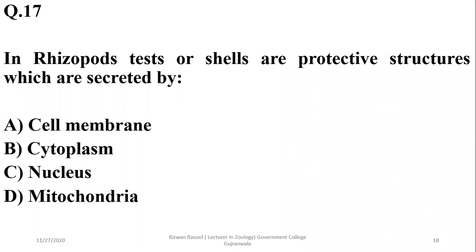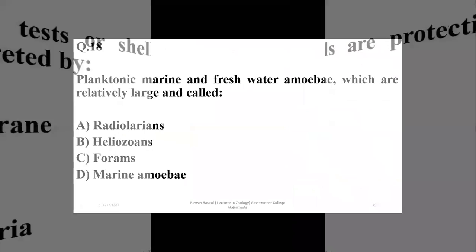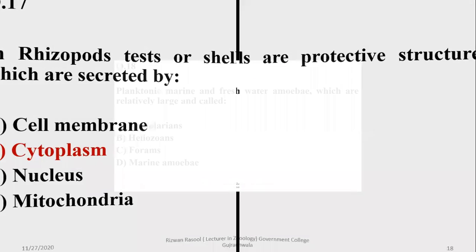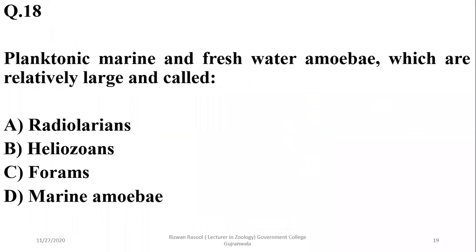Question seventeen: in Foraminifera, tests are shells or protective structures which are secreted by the cytoplasm. So the correct option is B. Question eighteen: planktonic marine and freshwater amoeba which are relatively large are known as Heliozoans. The correct option is B.